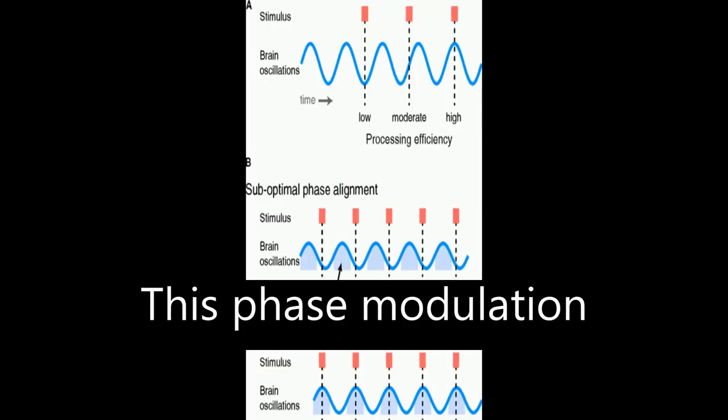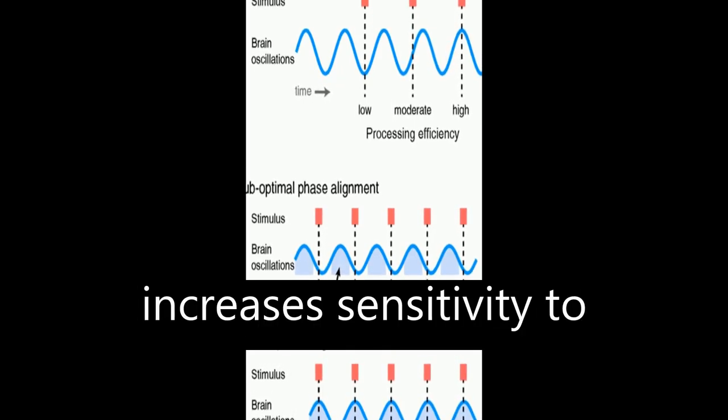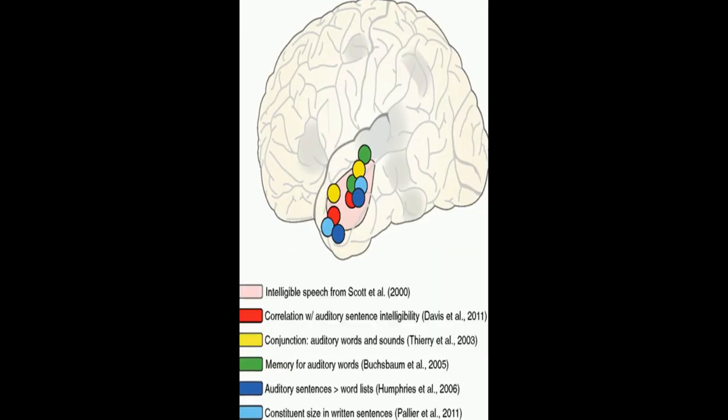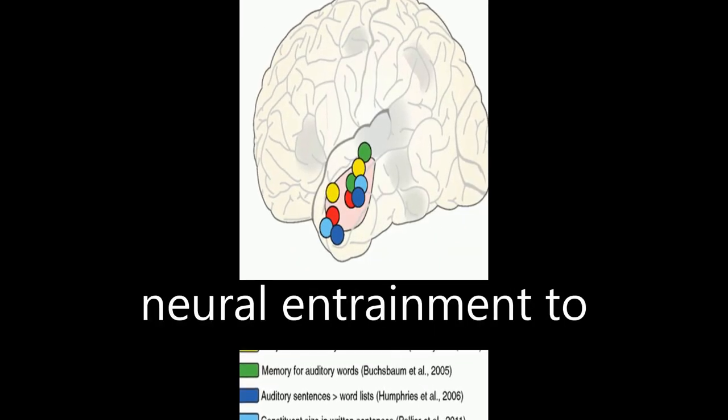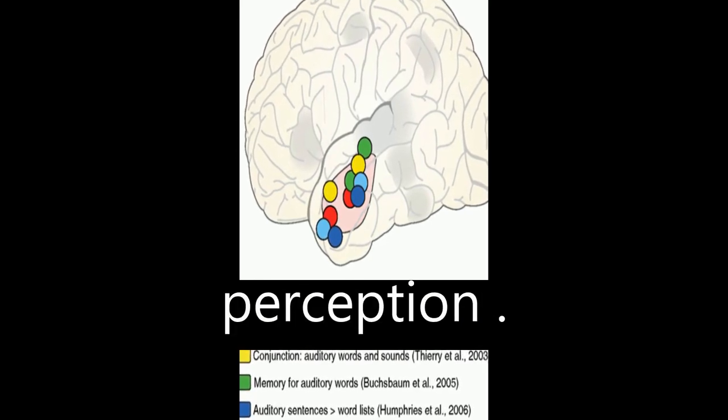This phase modulation helps listeners predict when important events are likely to occur and increases sensitivity to relevant acoustic cues. The article suggests a framework through which neural entrainment to speech rhythm can explain effects of speech rate on word and segment perception.